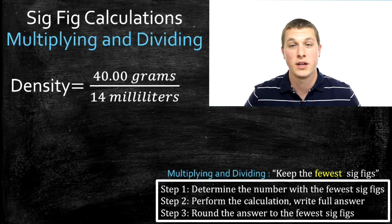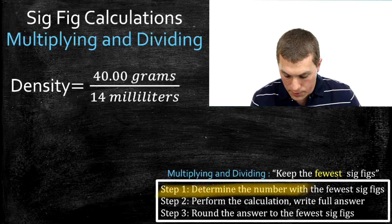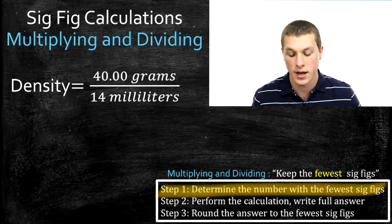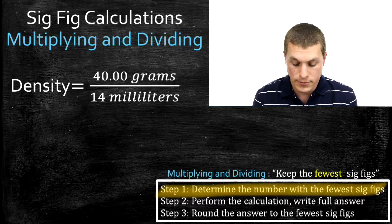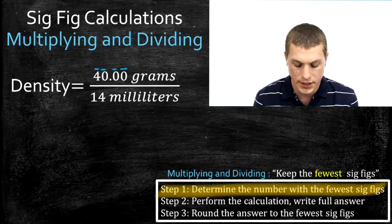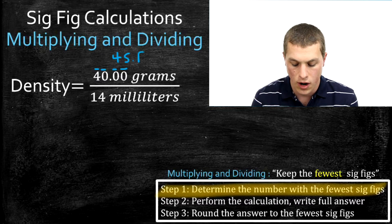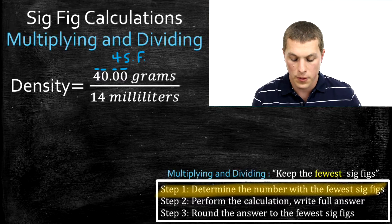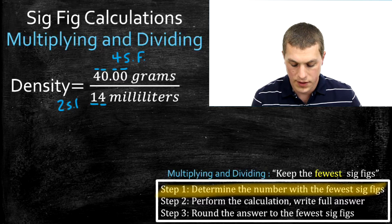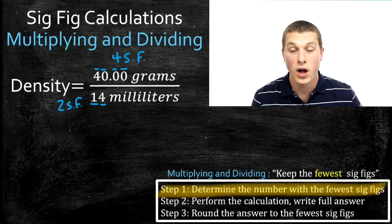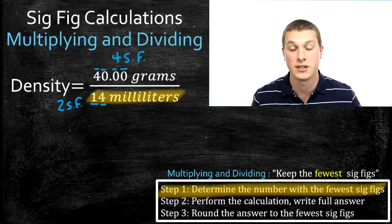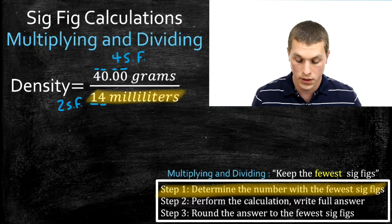This process is broken into three steps. Step one: determine the number with the fewest sig figs. Count how many sig figs each number in your calculation has. The top number is 40.00 grams — that has four sig figs, because trailing zeros after a written decimal point are significant. On the bottom we have 14 milliliters, which has just two sig figs because all non-zeros are significant.